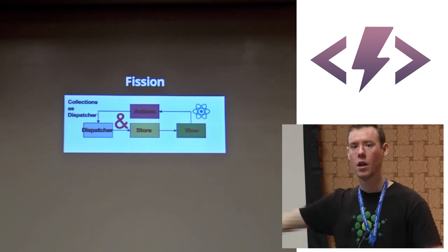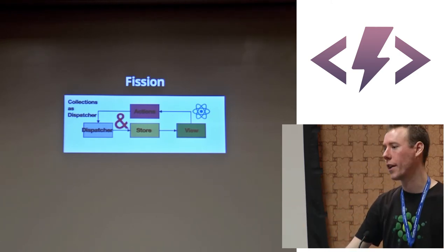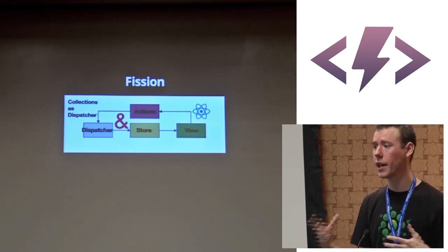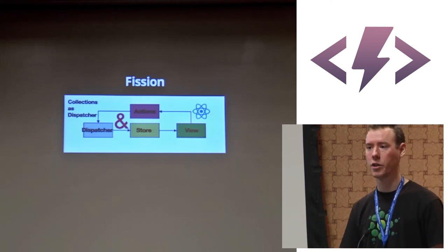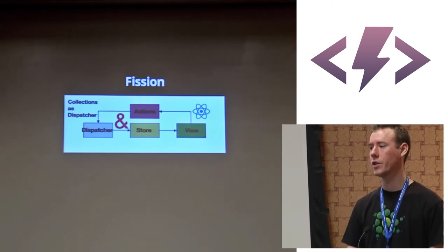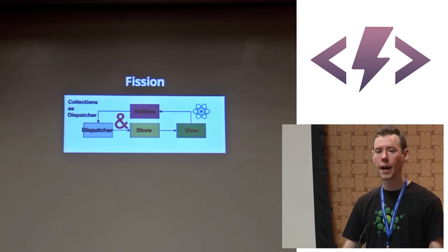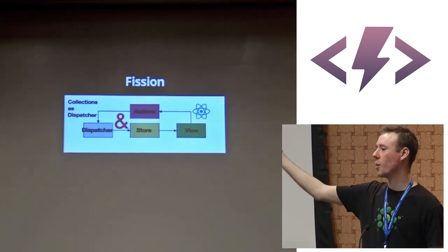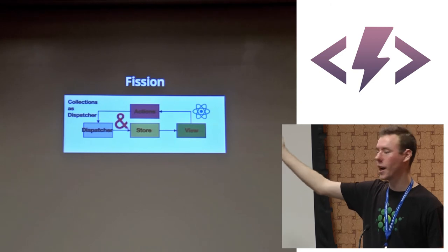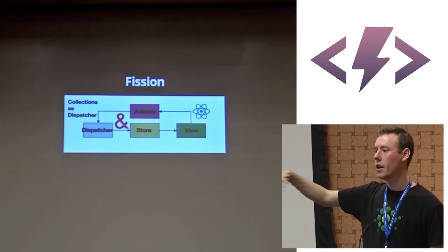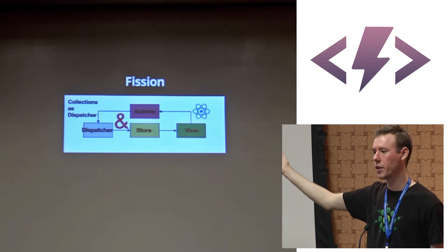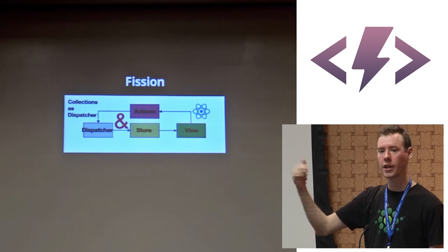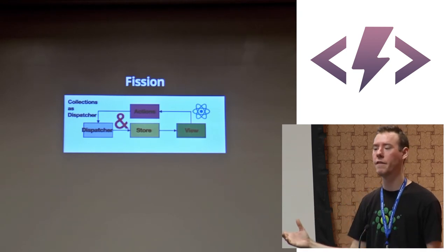When you have Backbone collections — or in my case Ampersand collections — it provides a global cache of collections. If I modify a model within a collection, it notifies its parent collection. That parent collection has a global cache. So in short, it forms a poor man's event bus — kind of what's going on with the Flux dispatcher.